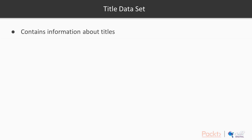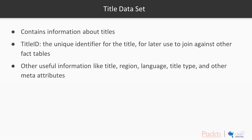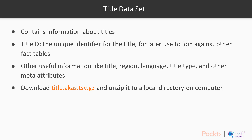First, there's the title dataset. This contains, unsurprisingly, information about titles — so that is movies, TV shows and the like. Title ID is the unique identifier for the title. This is very important because we're going to use it later to join against other fact tables we download. Other useful information like the title, region, language, title type, and other metadata are included in this file. To get it, download title.akas.tsv.gz and unzip it into a local directory on your computer, as we're going to need it in the next video where we'll create a new Redshift cluster and demonstrate how to import the data.